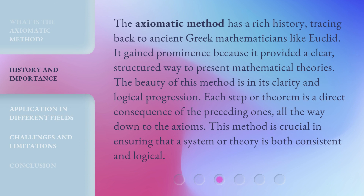The axiomatic method has a rich history, tracing back to ancient Greek mathematicians like Euclid. It gained prominence because it provided a clear, structured way to present mathematical theories. The beauty of this method is in its clarity and logical progression. Each step or theorem is a direct consequence of the preceding ones, all the way down to the axioms. This method is crucial in ensuring that a system or theory is both consistent and logical.